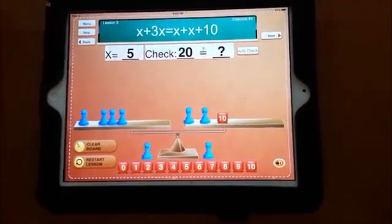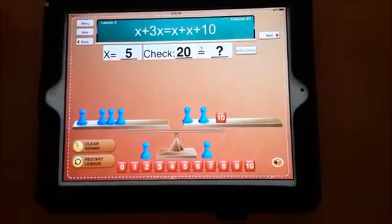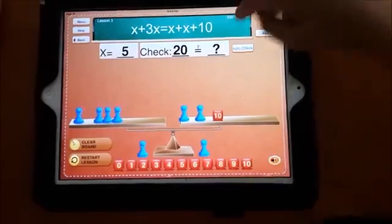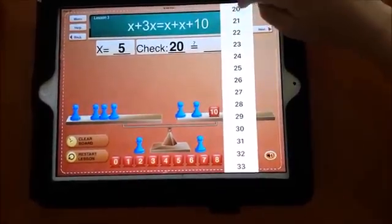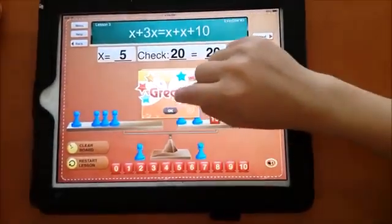And what's the right side worth? Five and five is 10. And another five is 20. Okay, select 20. Okay, so you solved that equation.